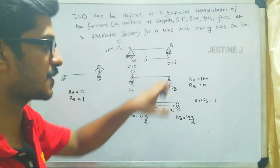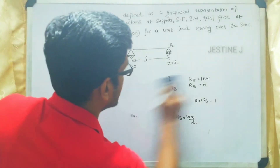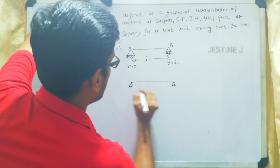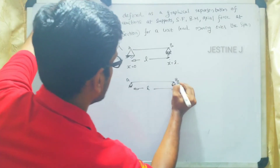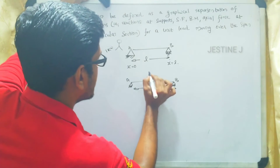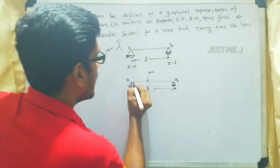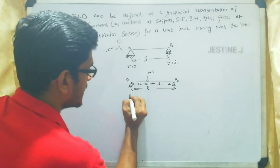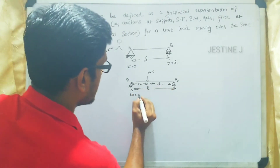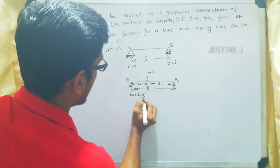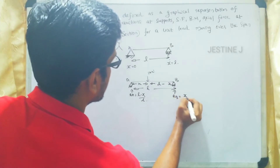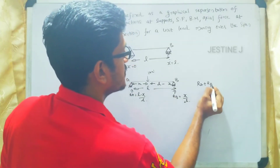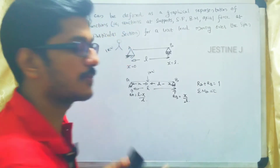In the general case for a simply supported beam with span l, when a unit load of 1 kilo Newton is at distance x from A, the general formulas are: Ra equal to (l minus x) divided by l, and Rb equal to x divided by l. If you find it difficult, you can also use Ra plus Rb equal to 1 and sigma M_A equal to 0 to get the same answer.